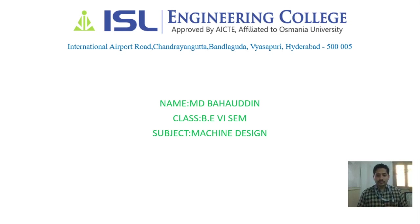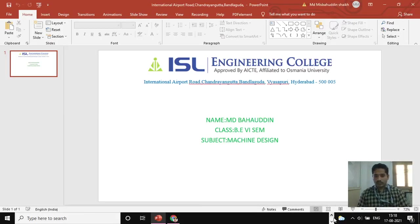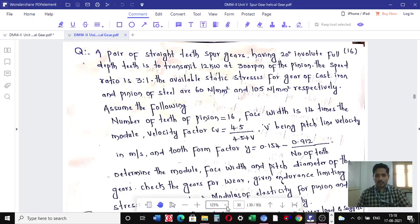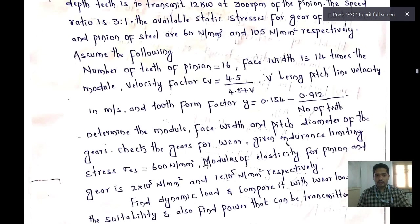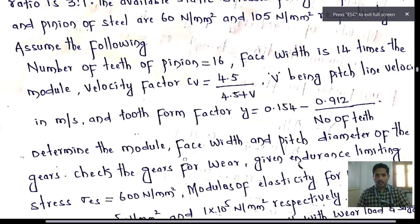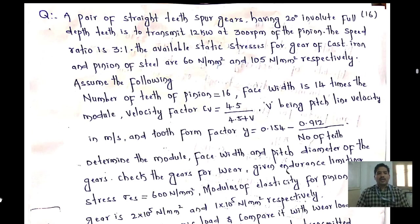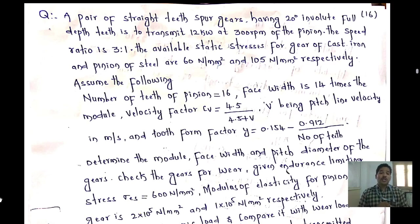First of all I will read the question. A pair of straight teeth spur gear having 20 degree involute full depth — this means the spur gear has a pressure angle alpha of 20 degrees. It is to transmit a power of 12 kilowatt at a speed of 300 rpm of the pinion. So N1 is given as 300 rpm and power is 12 kilowatt.